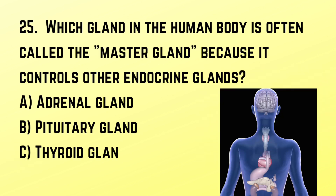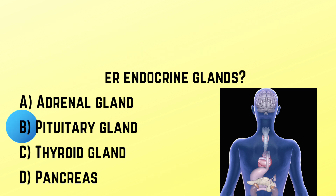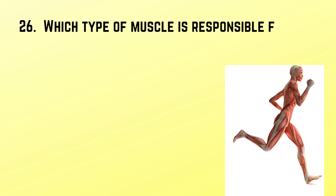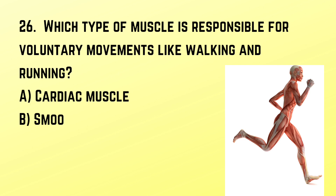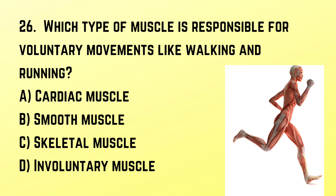Question number 25: Which gland in the human body is often called the master gland because it controls other endocrine glands? Correct answer: B. Pituitary gland. Question number 26: Which type of muscle is responsible for voluntary movements like walking and running? Correct answer: C. Skeletal muscle.